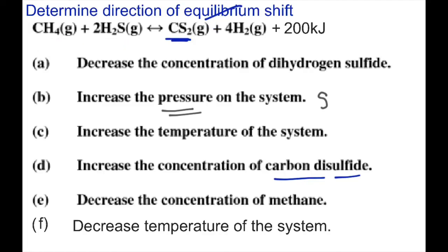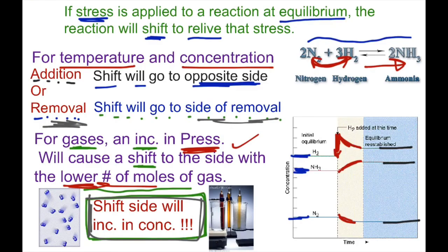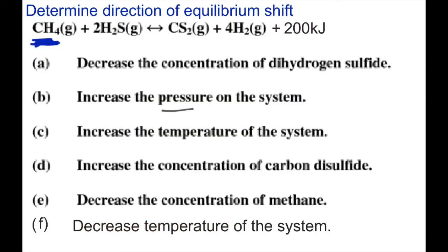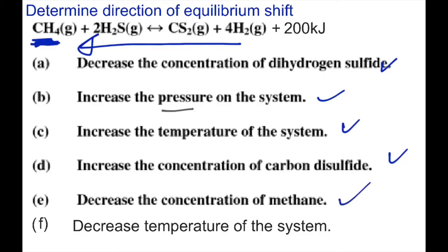Problem E: we are decreasing or taking away methane, CH4. Removing CH4 is a stress. By our rule, removal shifts the reaction to the side of removal. CH4 is on the reactant side, so the shift will go to the left again. That gives us five shifts to the left for A through E.